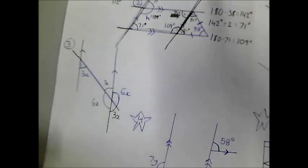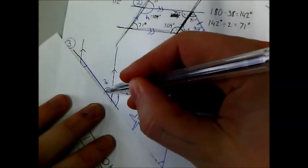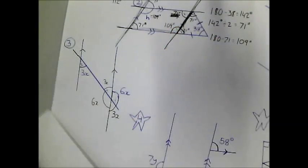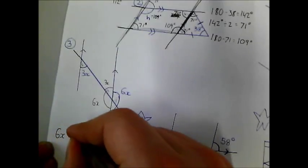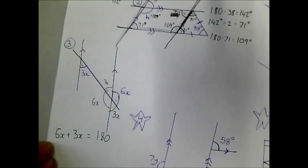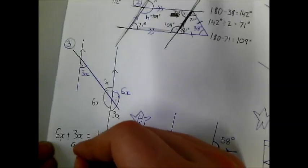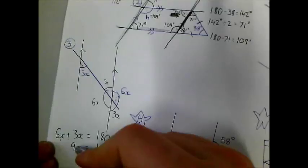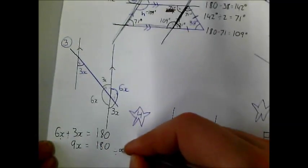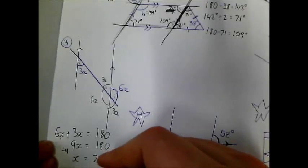You've got two choices — you can cover this bit up and see that angles on a straight line add to 180. So we can say 6x plus 3x equals 180 degrees because they lie on a straight line. 6x plus 3x is 9x, and dividing both sides by 9 gives x equals 20 degrees.